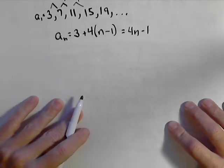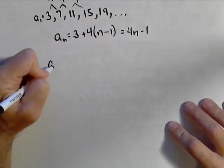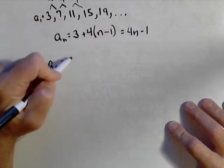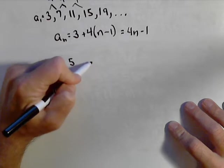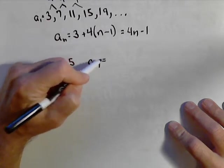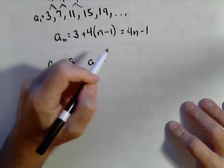Another way that you'll see, let's say the third term is five, and the seventh term is 17.